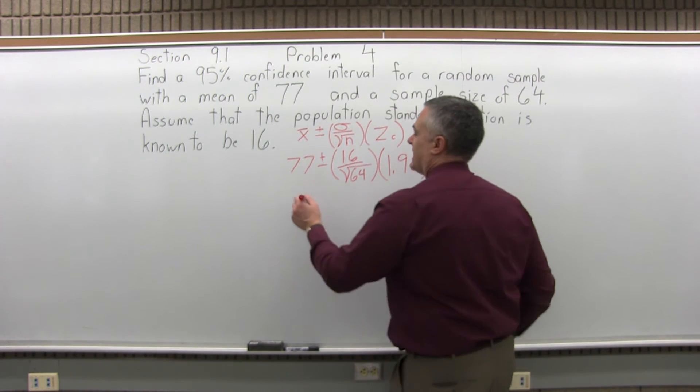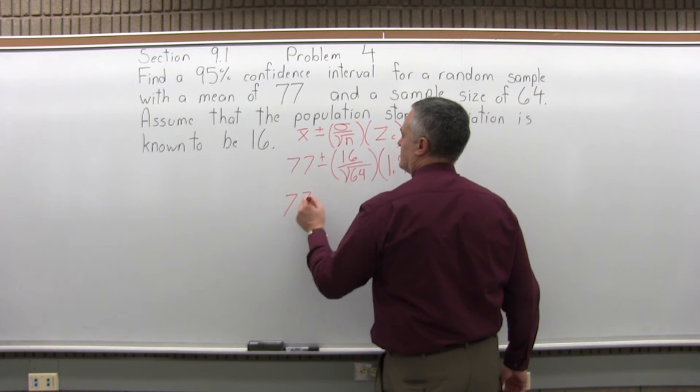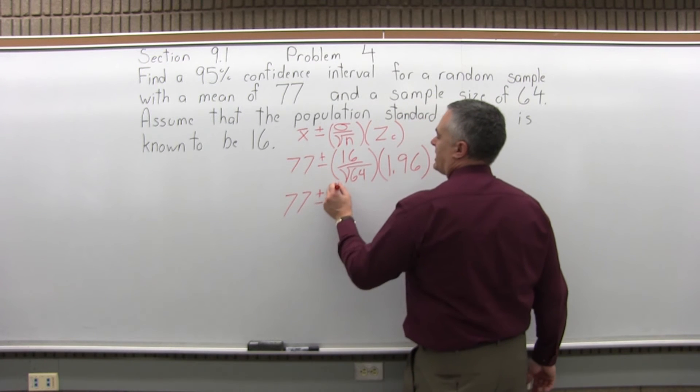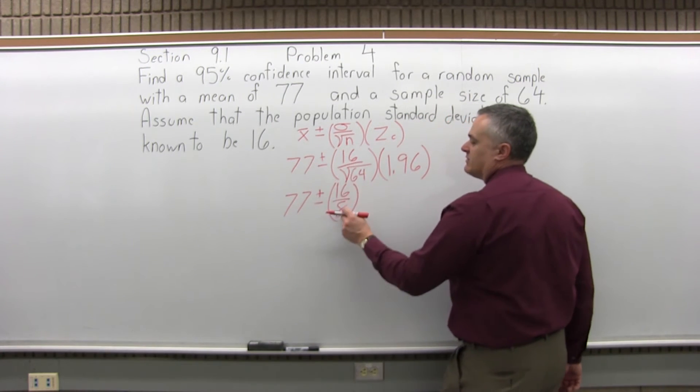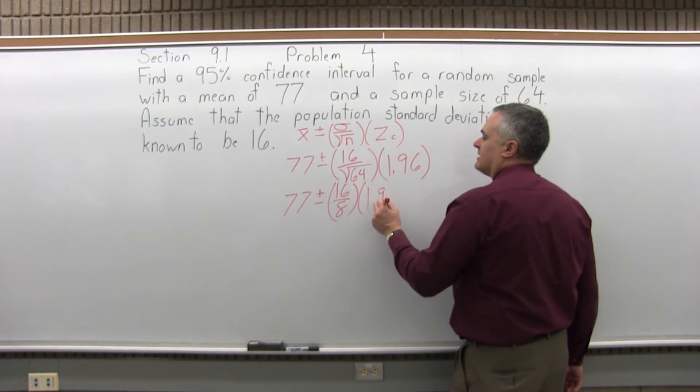So the square root of 64 I know is 8, because 8 times 8 is 64. So I'll have 77 plus or minus 16 over 8. That square root of 64 turns into an 8. And I'll leave the 1.96 at the end.